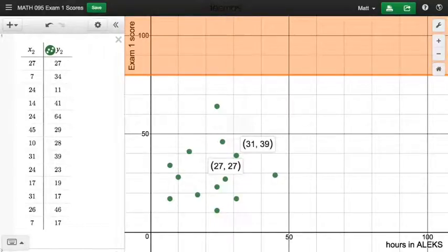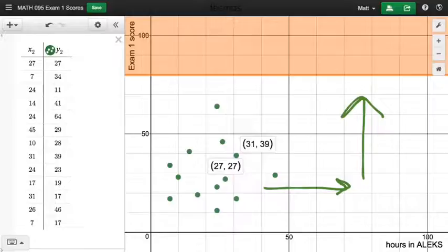Once we have more exams under our belt, we can look at how this relationship changes over time. In particular, over time, what's going to happen to all these points? They're all going to drift to the right for sure as you guys spend more and more time working in your ALEKS study plan, and we hope that they'll also drift upwards because your exam scores will increase over time.